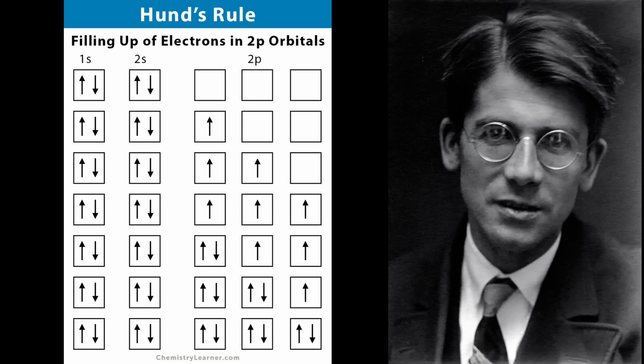Put simply, it means that the sub-shell orbitals should be initially occupied by electrons one at a time with parallel spins before they pair up. As a result, the term with the lowest energy also has the highest number of unpaired electrons.